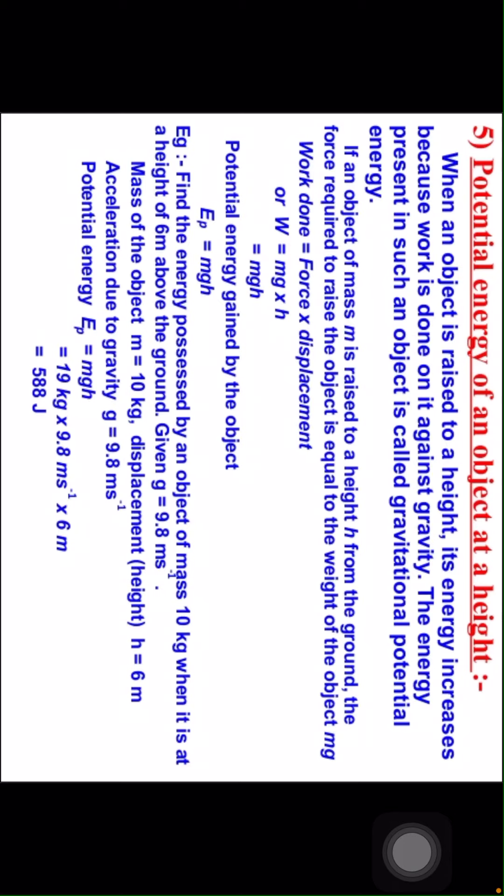When an object is raised to a height, its energy increases because work is done on it against gravity. The energy present in such an object is called gravitational potential energy. If an object of mass m is raised to a height h from the ground, the force required to raise the object is equal to the weight of the object, mg. So work done is equal to force times displacement. W is equal to mg into h, or mgh. So potential energy gained by the object, ep, is equal to mgh.